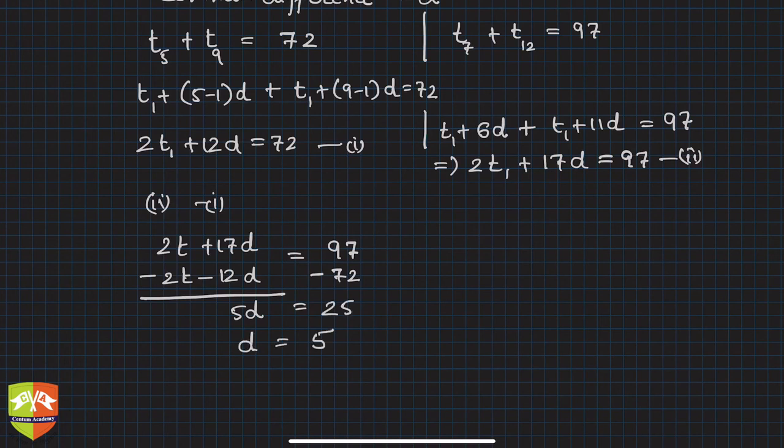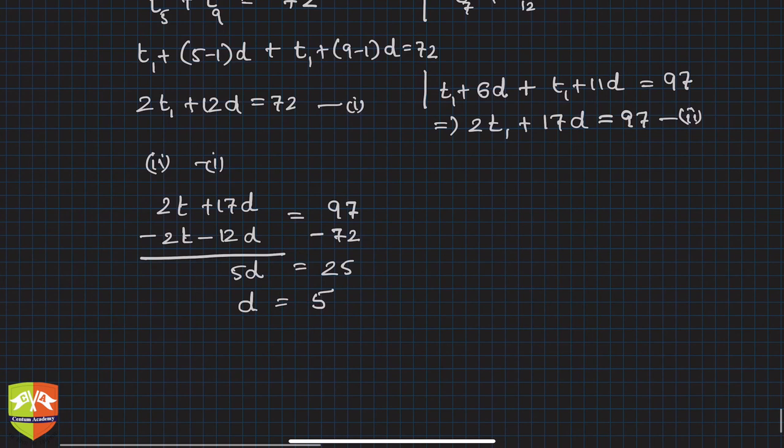So this will clearly give you d, that is equal to 5. So you got one of the two parameters, that is d, and you just need to find out the t1.